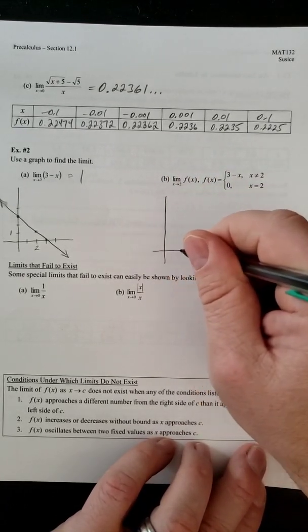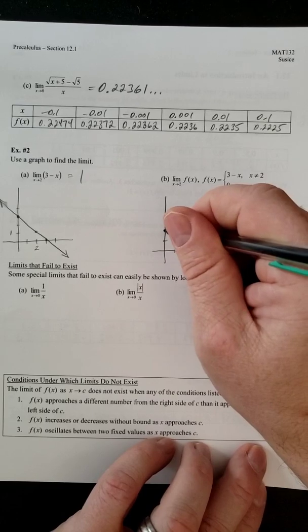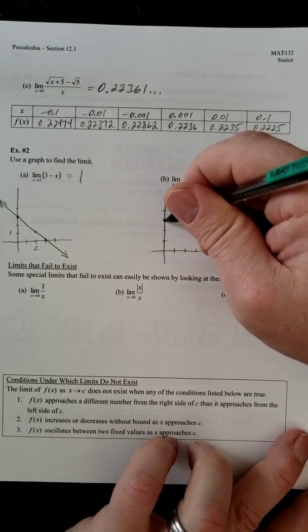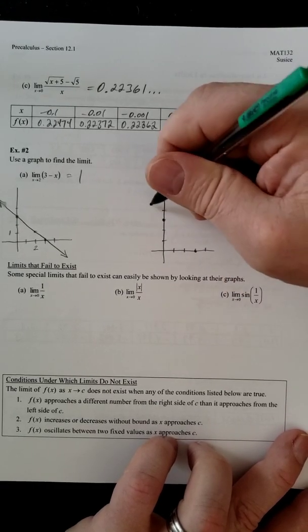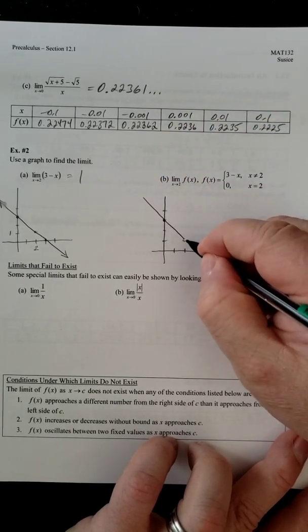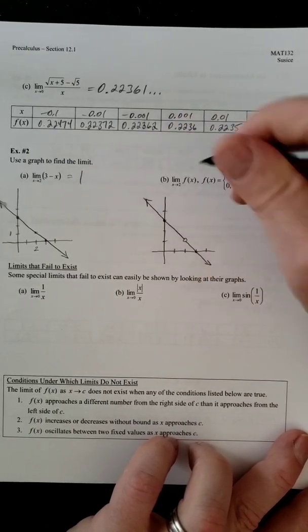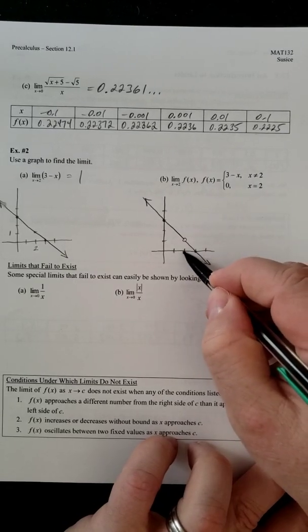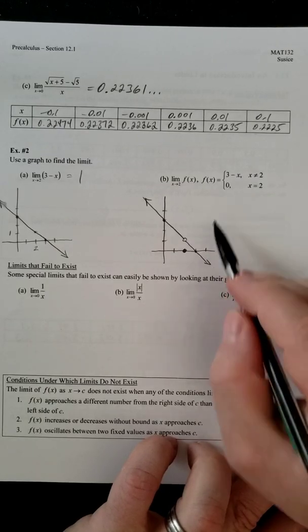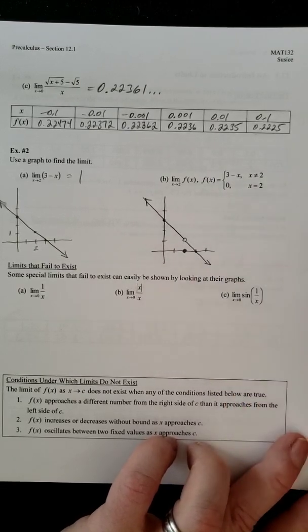So we'll get our points here and we're going to draw it. But when we get to 2, we're going to put a hole. And at 2, we're going to put a point at 0, because that's the y value now. The y value at x equals 2 is 0, no matter what. Everywhere else, it looks like 3 minus x. So this is the graph.